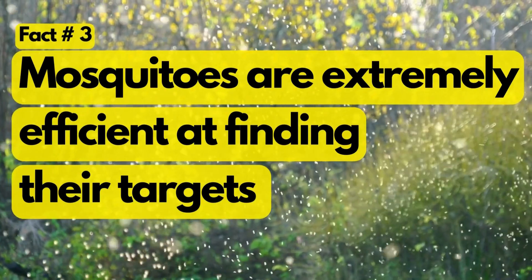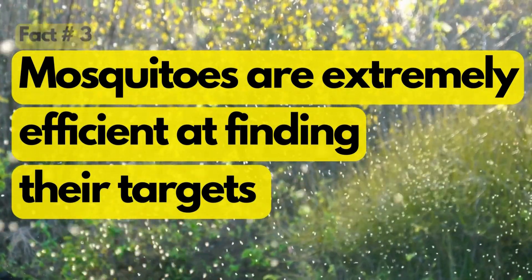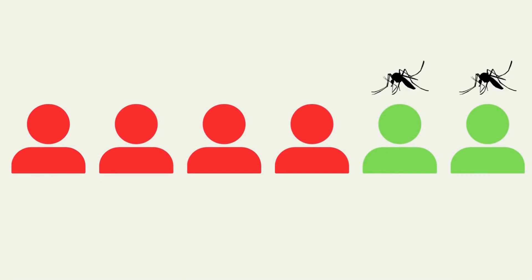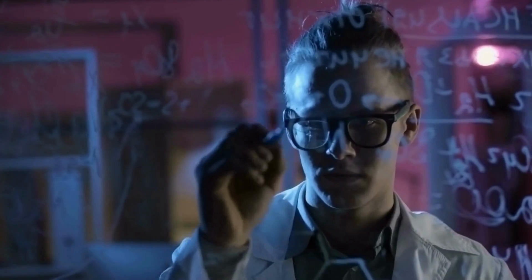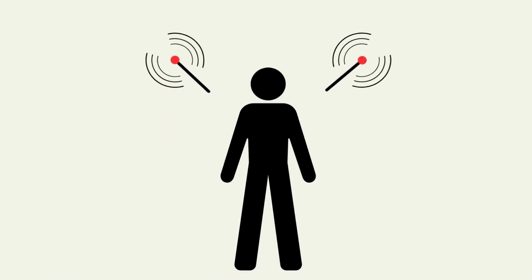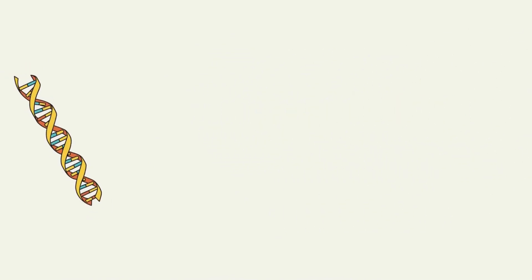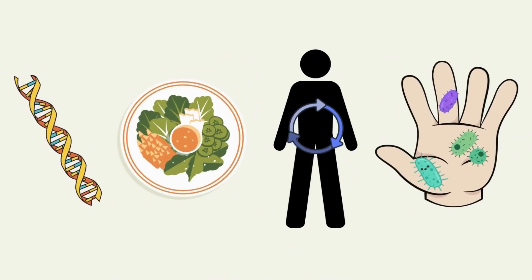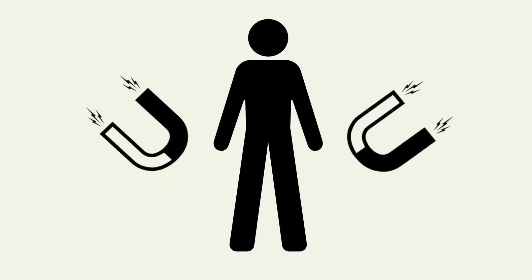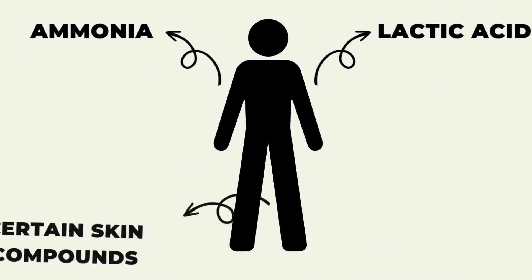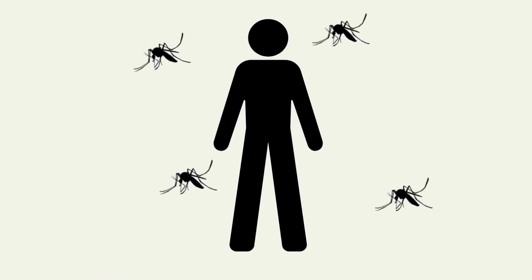Mosquitoes are extremely efficient at finding their targets. Ever wondered why mosquitoes seem to prefer certain individuals over others? Chemical Signals: Mosquitoes are attracted to the chemical signals emitted by individuals. These signals can vary based on factors such as genetics, diet, metabolism, and the bacteria present on the skin. Some people naturally produce more attractants such as lactic acid, ammonia, and certain skin compounds, which make them more appealing to mosquitoes.